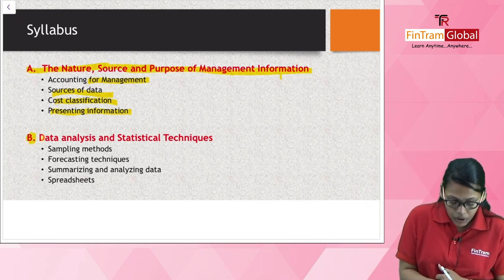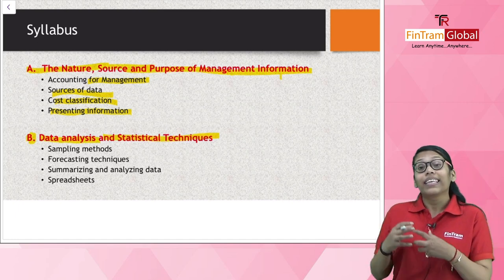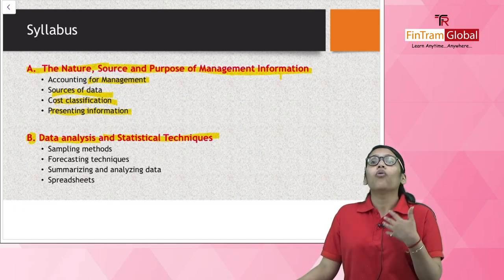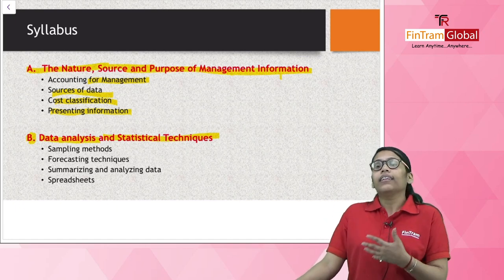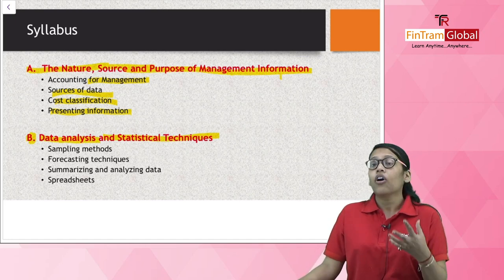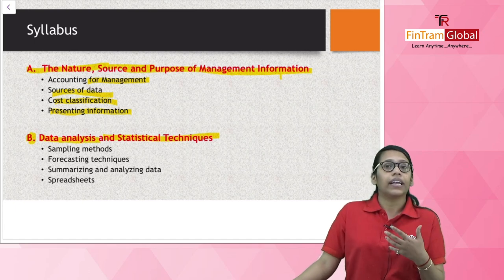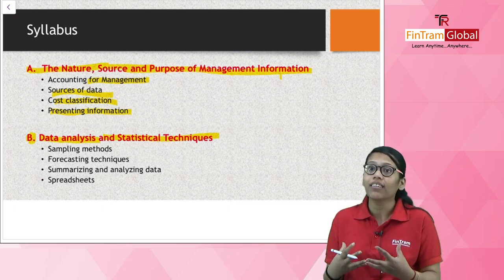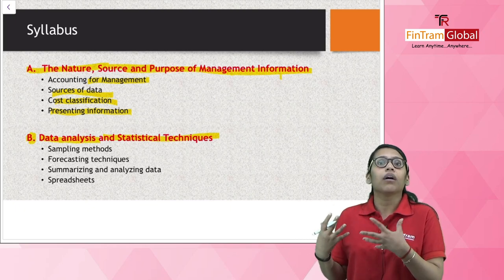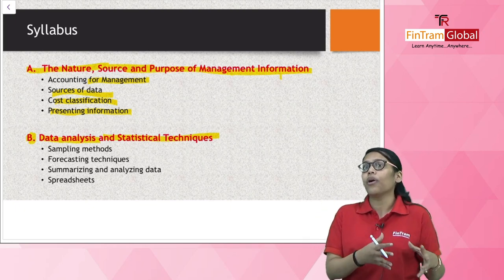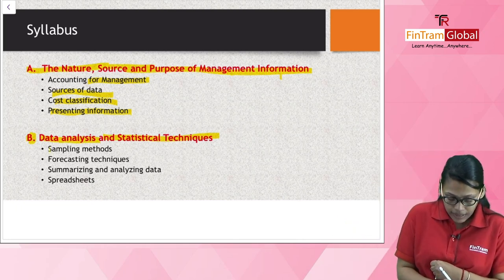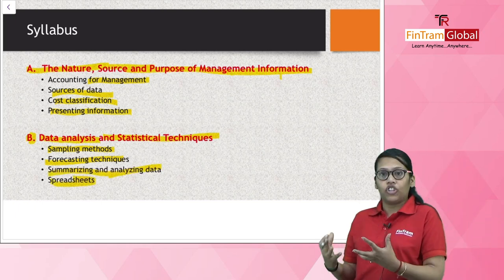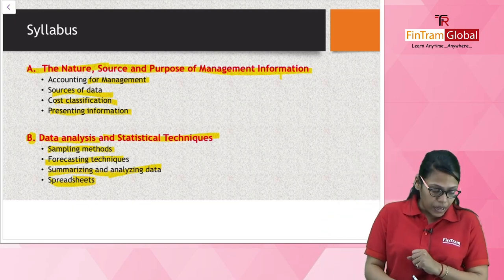The second section is Section B — Data Analysis and Statistical Techniques. Here we study how we can analyze data using different techniques and methods. We will understand techniques of sampling, different forecasting techniques, correlation, and standard deviation — and how all of these can be used to take decisions for our organization. Topics covered include: sampling methods, forecasting techniques, summarizing and analyzing data, and how to prepare spreadsheets.